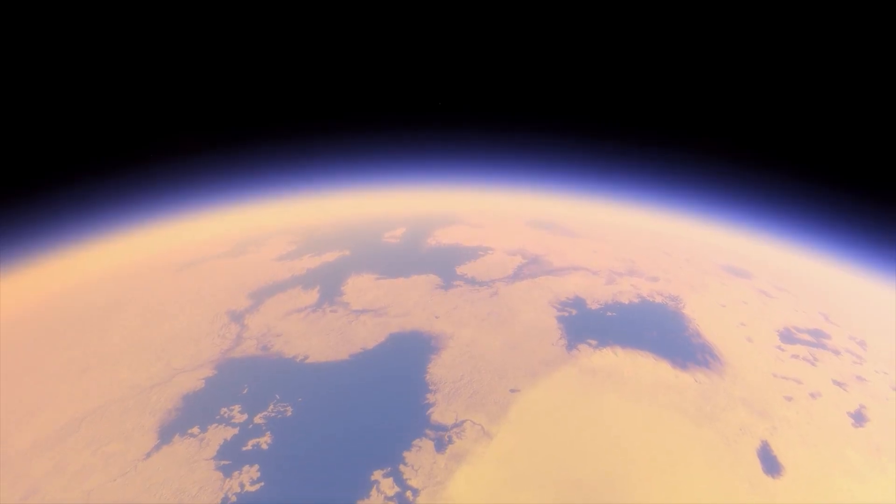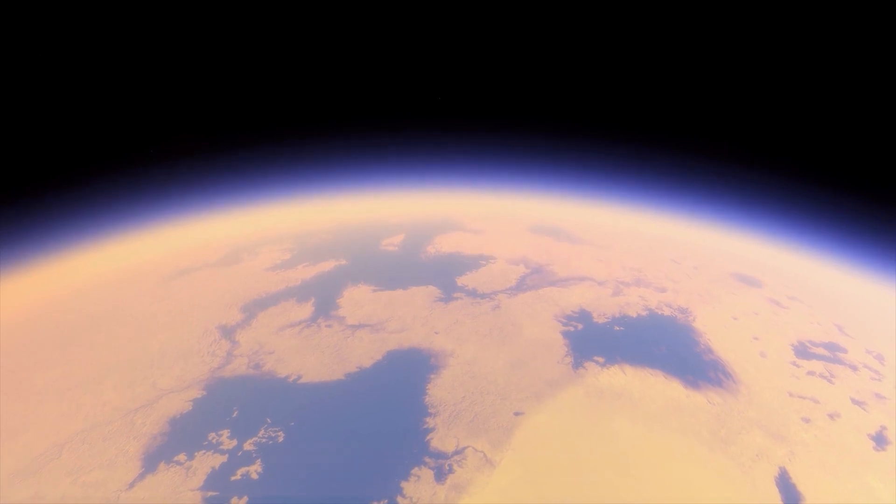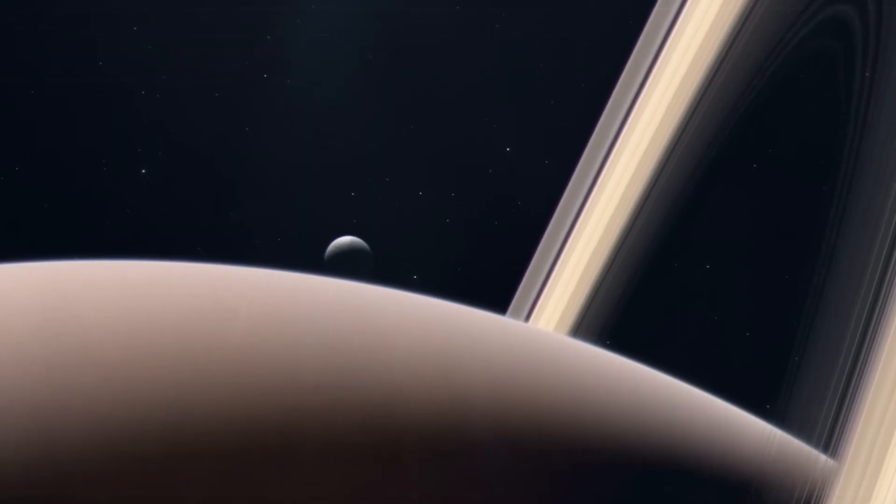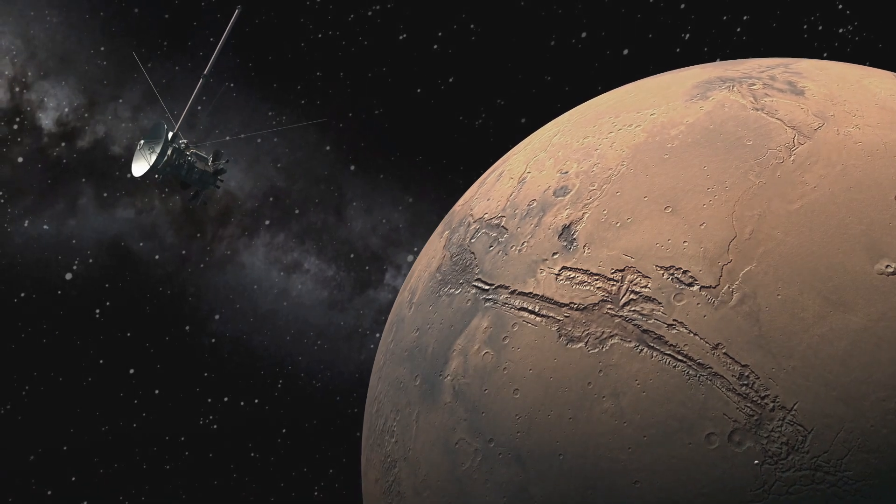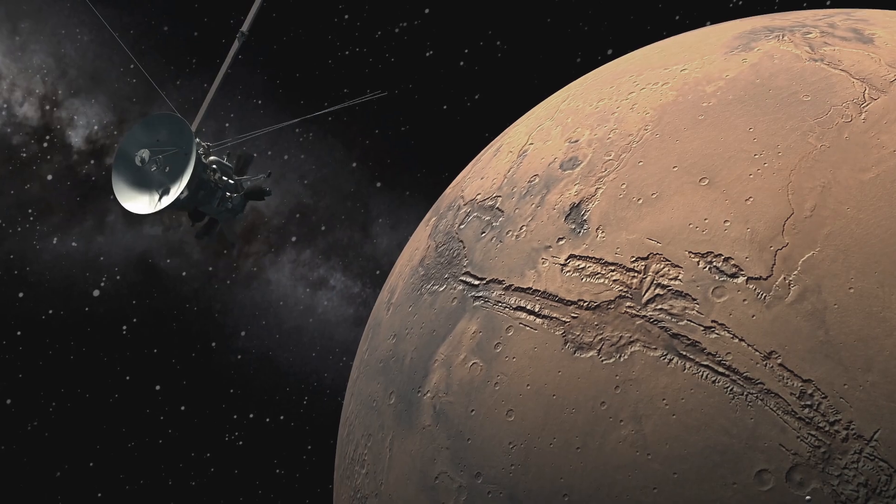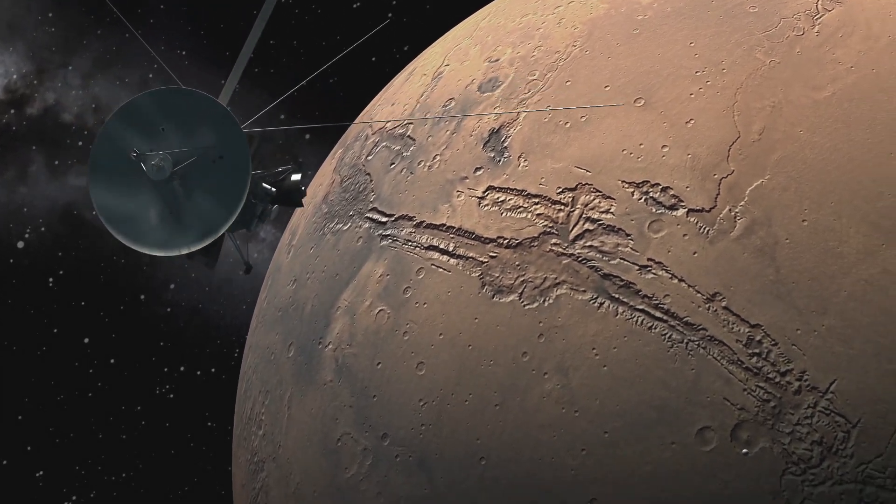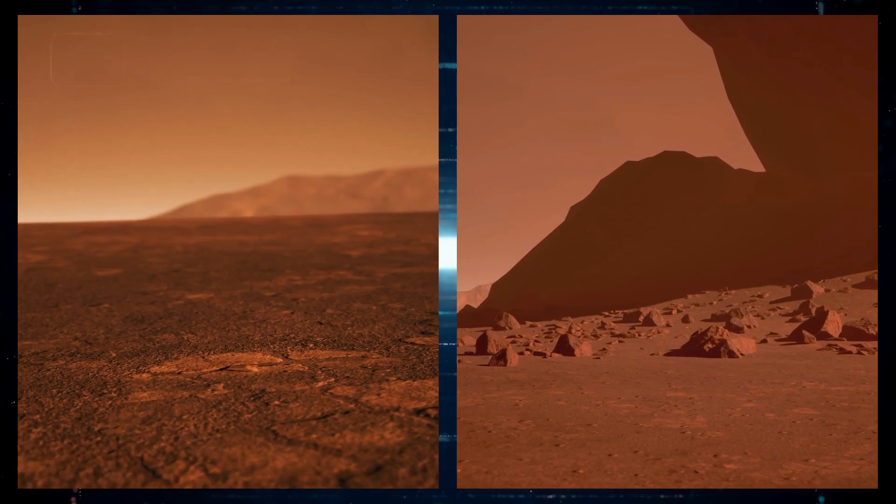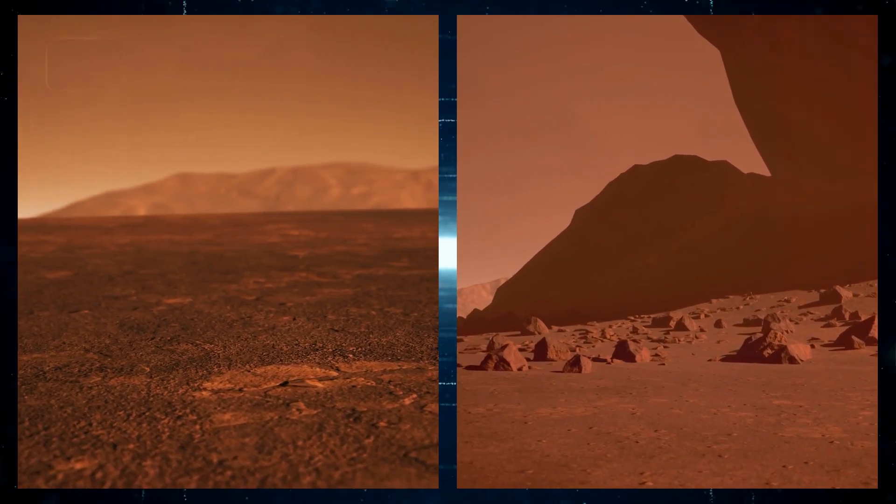Titan, in particular, captured the interest of scientists due to its thick atmosphere that obscured its surface from view. When Voyager 1 made its closest approach to Titan on November 12th at a distance of just 2,500 miles, 4,000 kilometers, it found that the moon's atmosphere was thick with nitrogen, making up 90 percent of its composition.